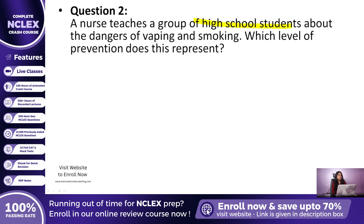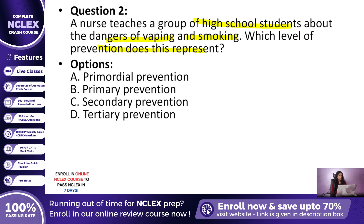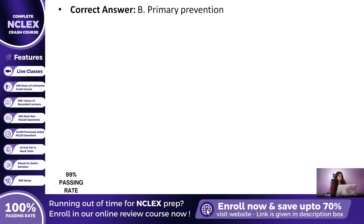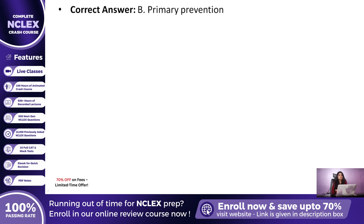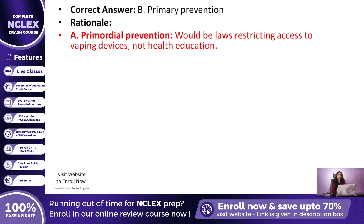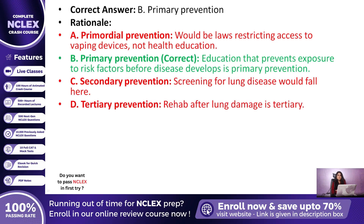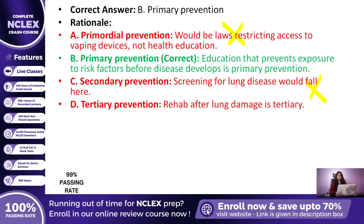Question 2: A nurse teaches a group of high school students about the dangers of vaping and smoking. Which level of prevention is this? The correct answer is B — Primary prevention. Health education aimed at preventing exposure to risk factors before disease develops always falls under primary prevention. Primordial would be a law that bans vaping access for teenagers, secondary would involve screening for lung disease, and tertiary would be rehabilitation after lung damage.